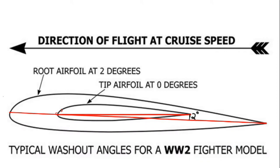This picture shows wing washout from a different perspective: two cutouts of the airfoil, with the large one at the wing root and the small one at the wing tip. You can see there's a two-degree difference between the chord lines of each airfoil section, meaning the root is always at a two-degree higher angle of attack than the tip. The root will therefore stall first and hopefully cause the aircraft to pitch down before the tip with the aileron ever stalls.